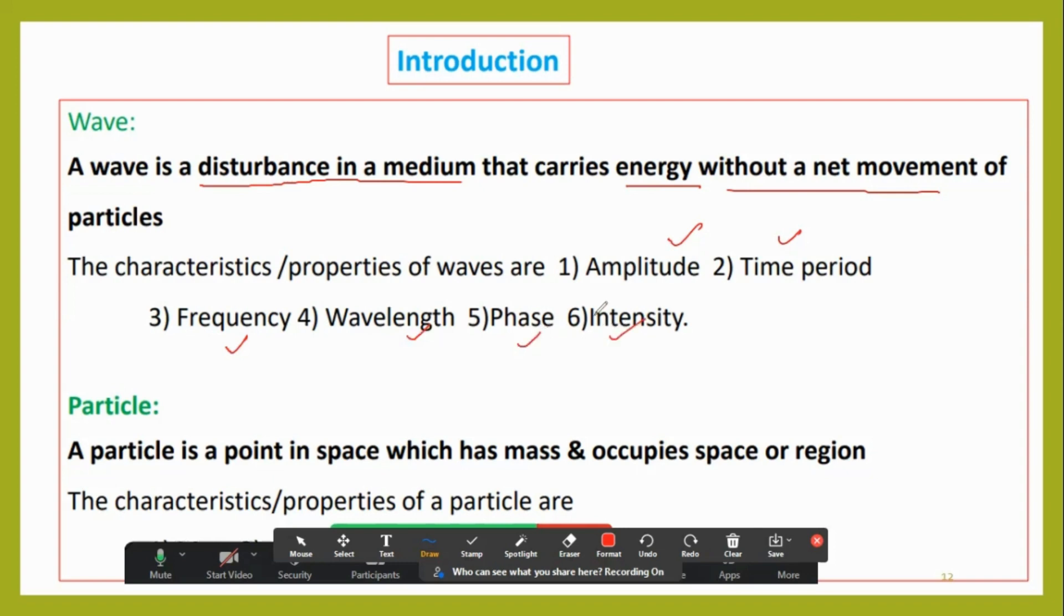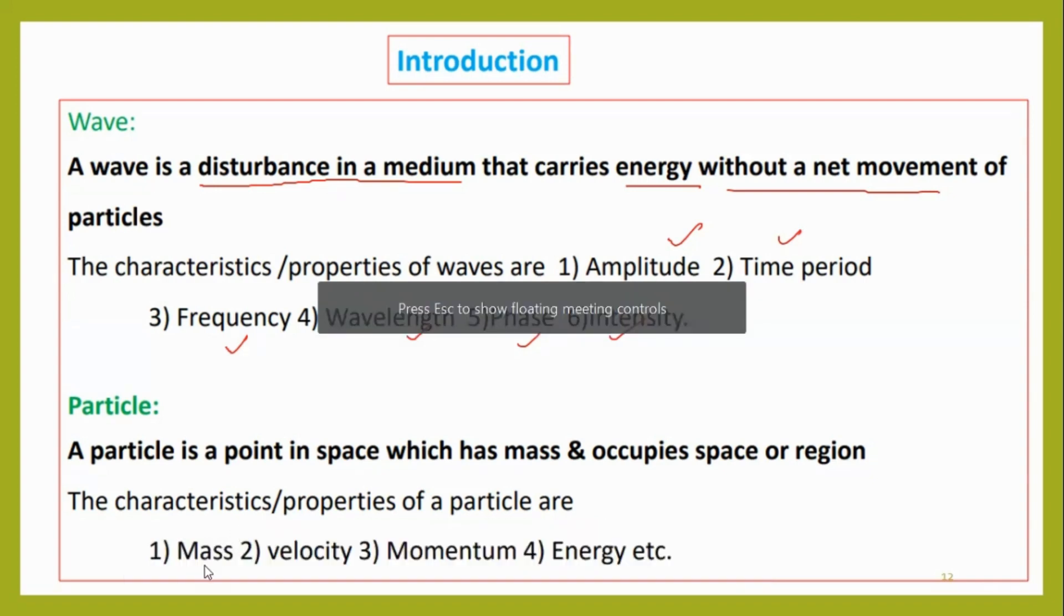Next one is particle. A particle is a point in space which has mass and occupies the space or region. Its characteristics are: mass, velocity, momentum, and energy.